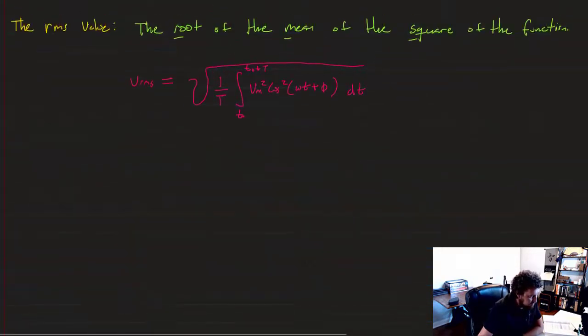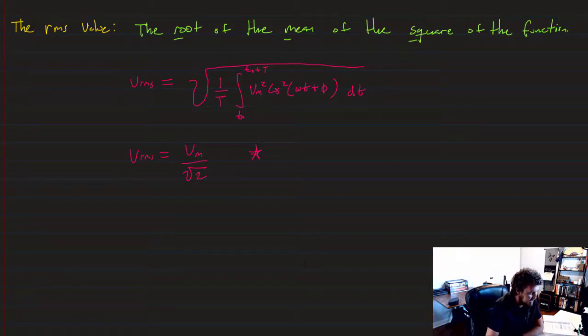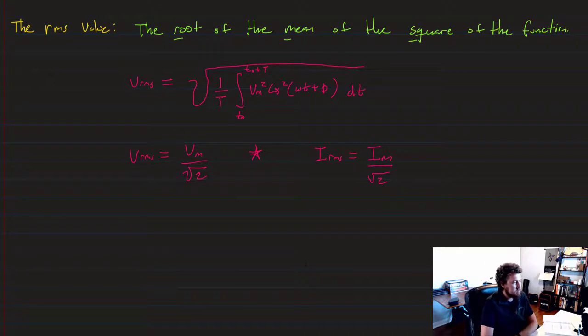Now, if you solve that integral, which we won't do, and actually simplify this to a really simple function, and all we have is this, that V RMS is simply equal to V M over the square root of 2. So, there's our equation for calculating V RMS, and I RMS is exactly the same, right? We would say that I RMS is simply equal to I sub M over the square root of 2. So, we use this a lot in later sections to make power calculations.